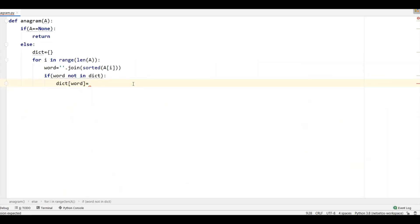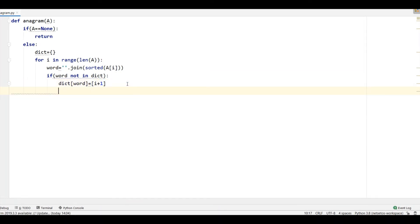So, my index is 0 over here. So, I will write i plus 1 and I want it in array form and if it is in dictionary, it will go to else part.